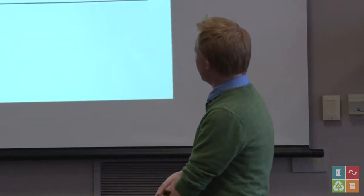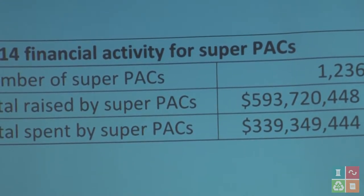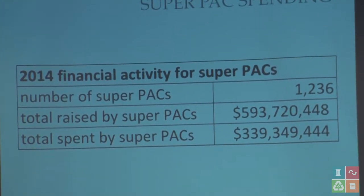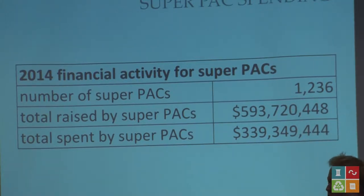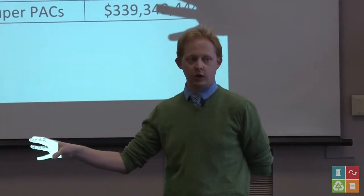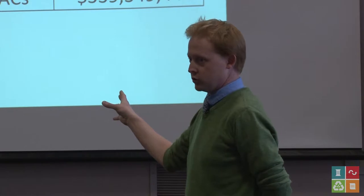One of the things we wanted to include in this presentation is background on what we just went through and what ended on Tuesday. The most updated numbers for this year: there were 1,236 super PACs involved in the 2014 election that did some kind of fundraising and spending. They raised $593.7 million and spent $339.3 million just from the super PACs — not including the actual campaigns, the DCCC, or the Republican Congressional Campaign Committee. And I'm certain the numbers are going to go up drastically.